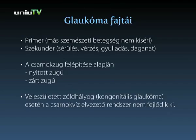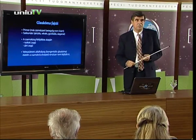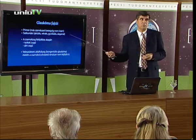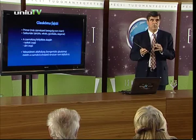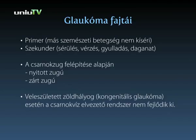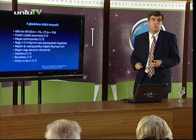Milyen fajtái vannak a glaukómának? Két nagy csoportról beszélünk: a primer és a szekunder glaukómáról. Primer glaukómánál nincsen más egyéb szemészeti betegség, míg szekunder glaukómánál egy sérülés, gyulladás, vérzés, vagy akár a szem belsejében növekvő daganat az, ami a nyomás fokozódásához vezet. A csarnokzug a szivárványhártya és a szaruhártya között bezárt zug, átlagban 40-45 fokos. Ennek nyitottsága alapján beszélünk nyitott zugú, illetve zárt zugú glaukómáról. Van egy speciális fajta, a veleszületett, kongenitális glaukóma is. A nyitott zugú, szimplex glaukómánál milyen rizikótényezőkkel találkozunk?